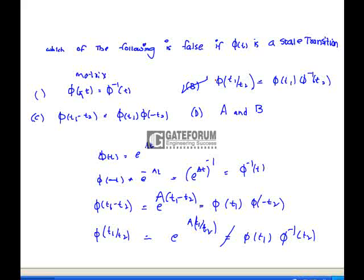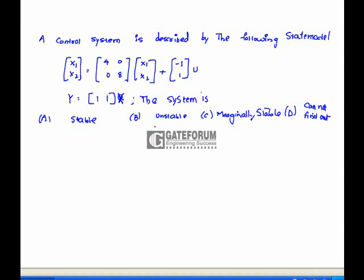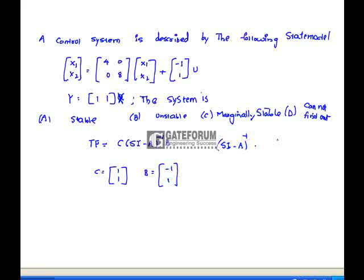A true system is described by a given state model. We have to find out whether the system is stable, unstable, or marginally stable. Before deciding, we find the transfer function from the state model: transfer function = C·(sI − A)⁻¹·B, where C = [1 1], B = [−1 1]ᵀ.